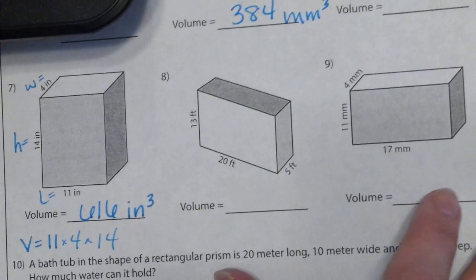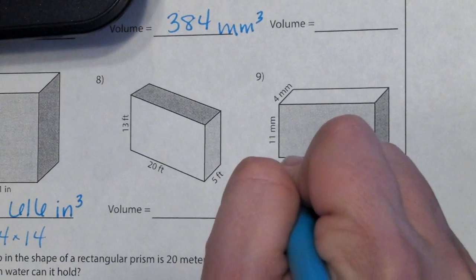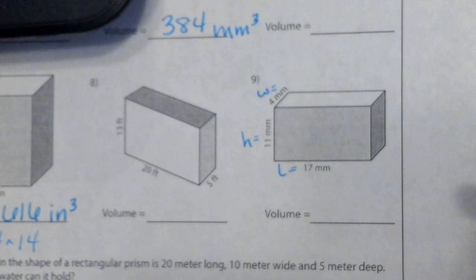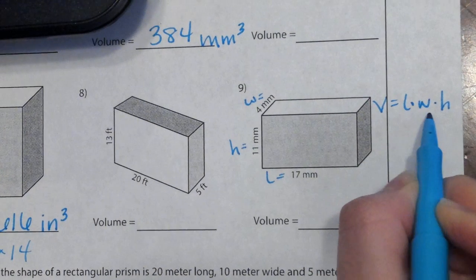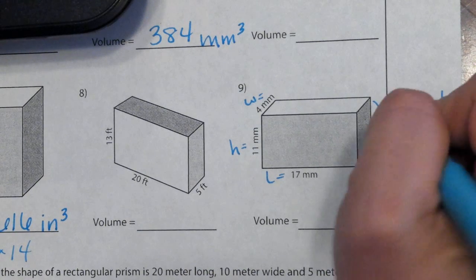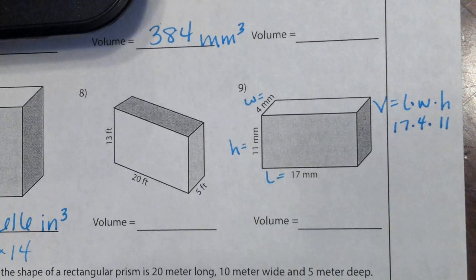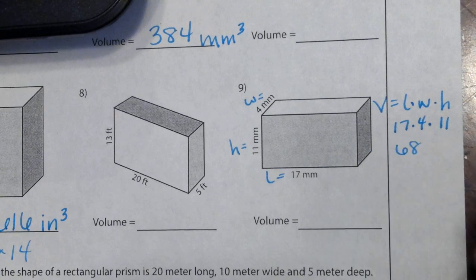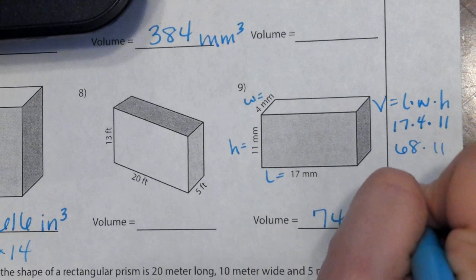We'll do one more together, and then you're going to do the even ones on your own, and we're going to check them tomorrow. So here is my length, my height, and my width. Volume is length times width times height, because remember, length times width is really the area of the base. Seventeen times four is sixty-eight, sixty-eight times eleven is 748 millimeters cubed.